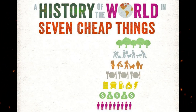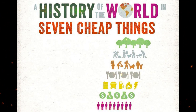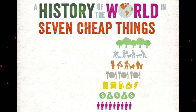Indigenous people and European peasants were the first cheap lives; the unpaid labor of these workers' womenfolk was the first cheap care. From this origin, the authors trace the development of cheap money through industrialization to financialization.